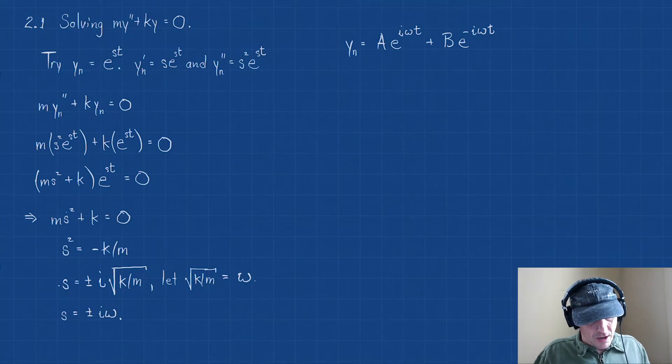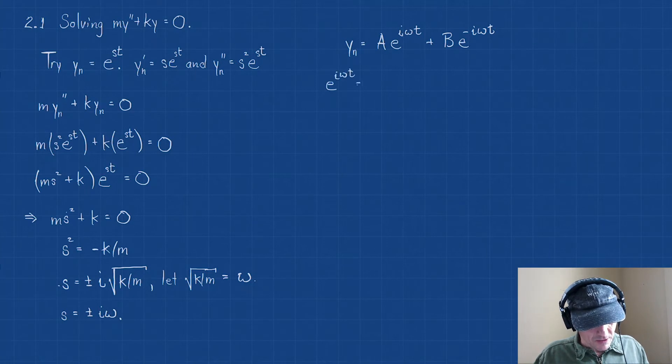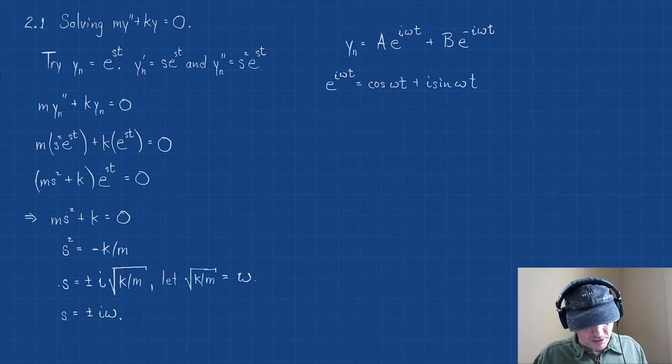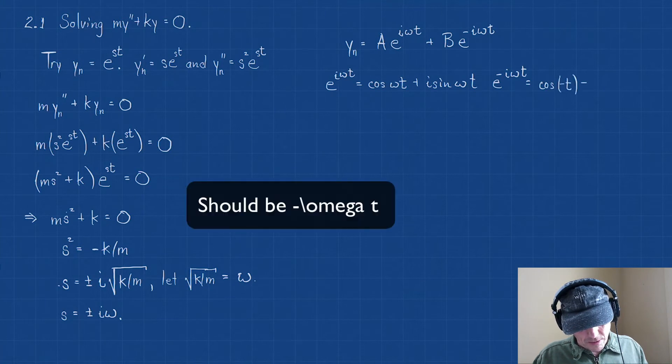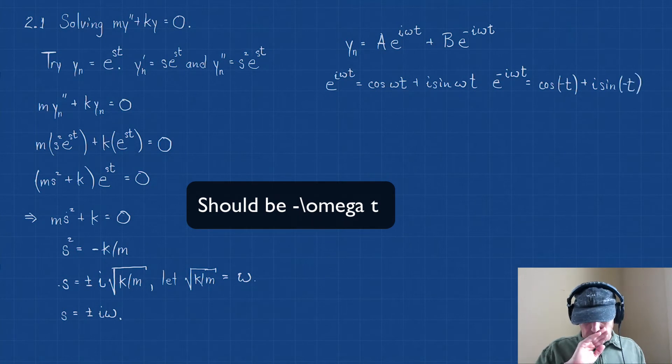So let's try this. We need to expand this. Remember that e^(iωt) = cos(ωt) + i·sin(ωt).